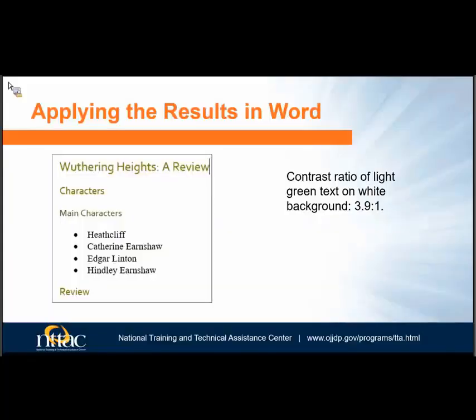If an element fails the required color contrast ratio, you will need to make some adjustments. If the failure is in an image, you will need to recreate that image with appropriate color contrast. If it is text, you can easily change the color by using the font color picker, ideally through styles, which we will discuss later.